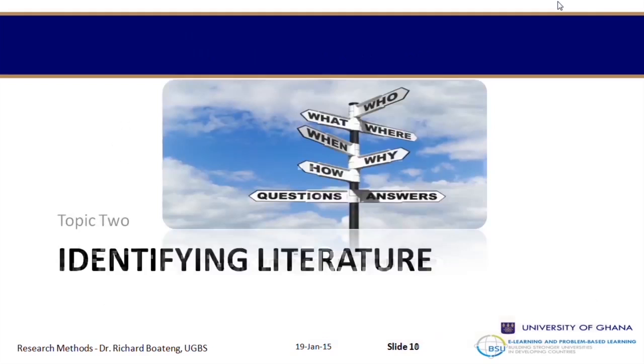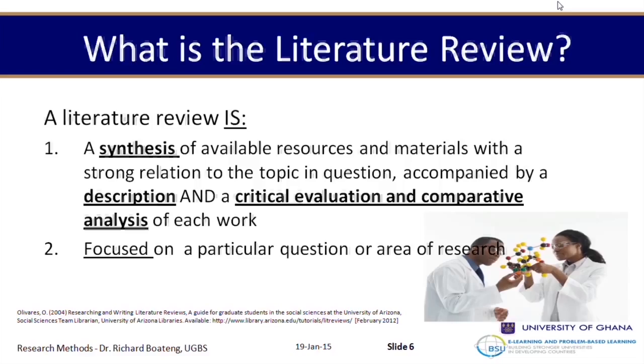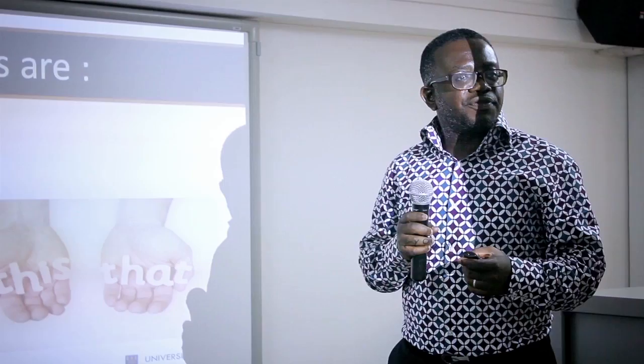The first three steps link directly to the first part of our definition — a synthesis of available resources and materials with a strong relation with the topic in question. Before you start any literature review, you need a topic — what are you selecting the literature on if you don't have one? A topic is the starting point of a literature review. Then you identify and locate literature to synthesize. Third, you ensure relevance — you cannot choose literature that is not relevant to your topic area.